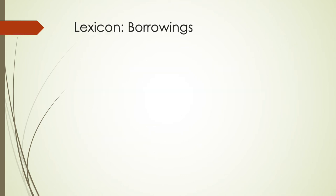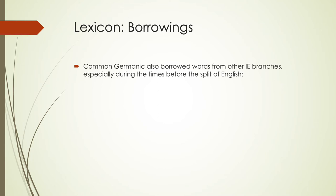There's evidence of borrowing during the common Germanic period, even before it split into individual Germanic languages or English. Latin had already begun to influence the language with words like copper, ark, cheese, kettle, ass as in the donkey, and linen — words borrowed during common Germanic that we can trace back to Latin origins. Also, some Celtic words such as king and iron were brought into Germanic before English became its own language, dated by sound and linguistic changes.